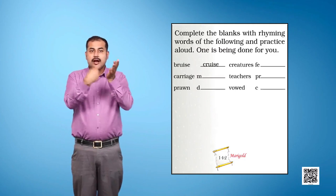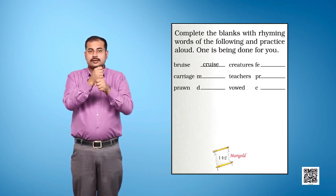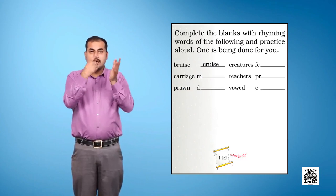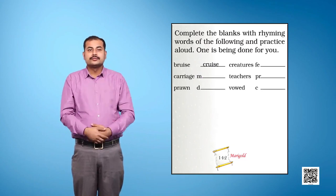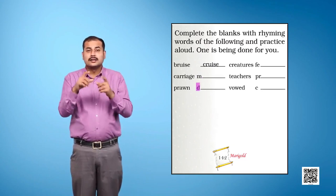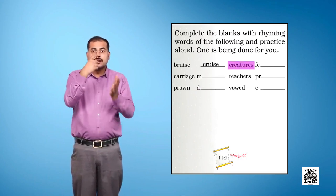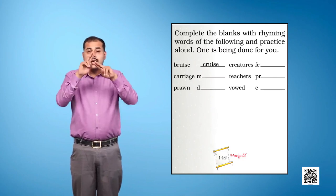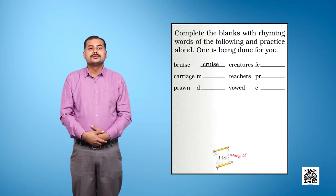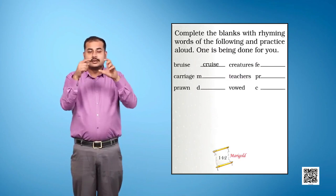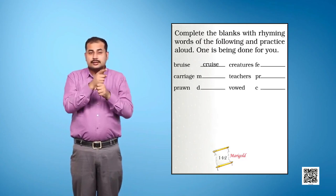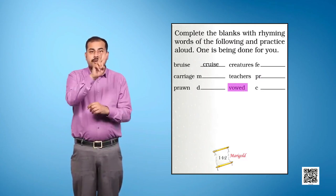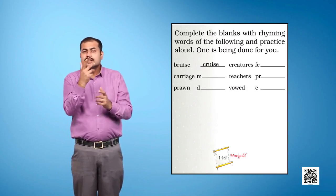Carriage. The rhyming word starts with M. Prawn. The rhyming word starts with D. Creatures. The rhyming word starts with F.E. Teachers. The rhyming word for it starts with P.R. The rhyming word for it starts with C.